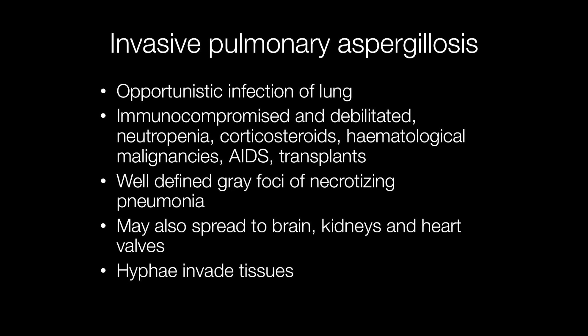Grossly, the foci of aspergillosis form well-defined areas of necrotising pneumonia. In invasive pulmonary aspergillosis, the hyphae invade the tissues and may spread to the brain, kidneys, heart valves, liver, and elsewhere.